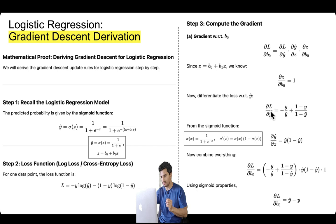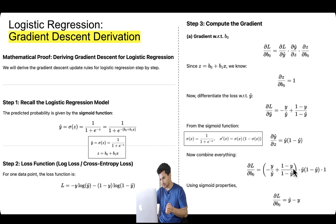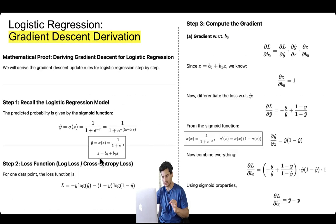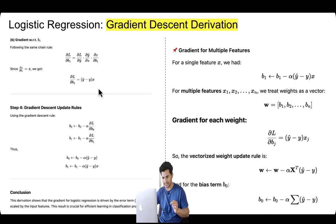Multiplying all three terms together and simplifying, we get ∂L/∂b₀ = ŷ - y. Now for b₁: the same chain rule applies — ∂L/∂b₁ = (∂L/∂ŷ) · (∂ŷ/∂z) · (∂z/∂b₁). Everything is the same, with one difference: when we take the derivative of z with respect to b₁, x comes out, so ∂z/∂b₁ = x. Therefore ∂L/∂b₁ = (ŷ - y)·x.